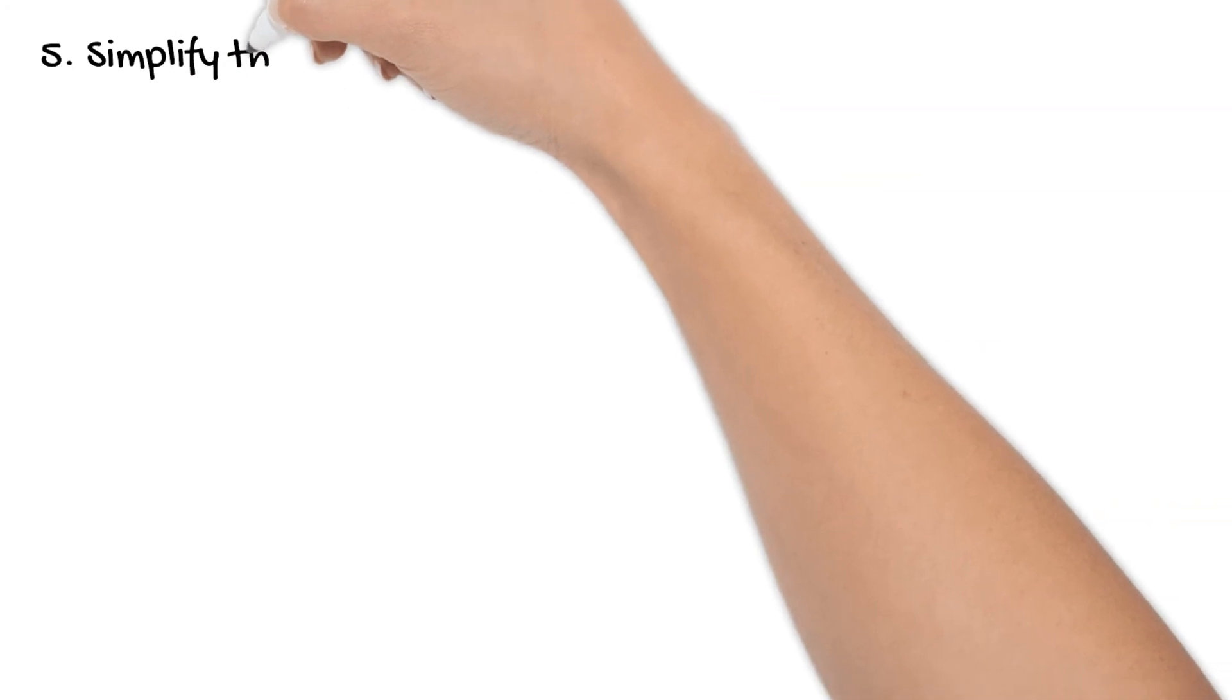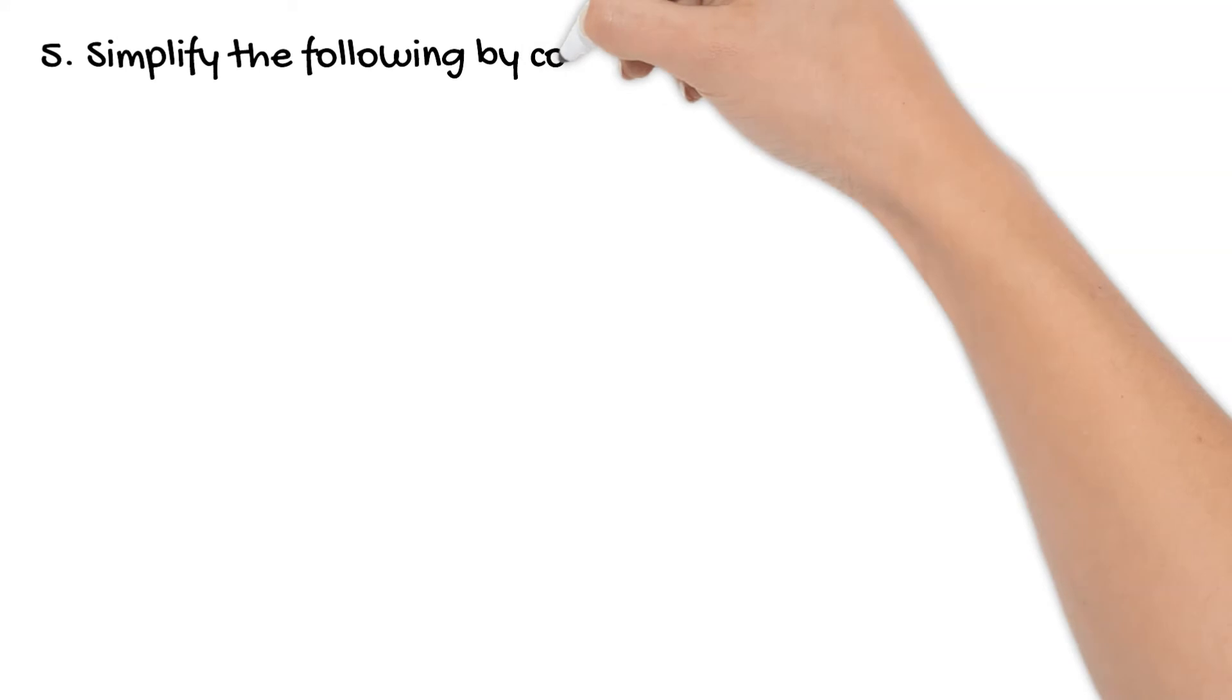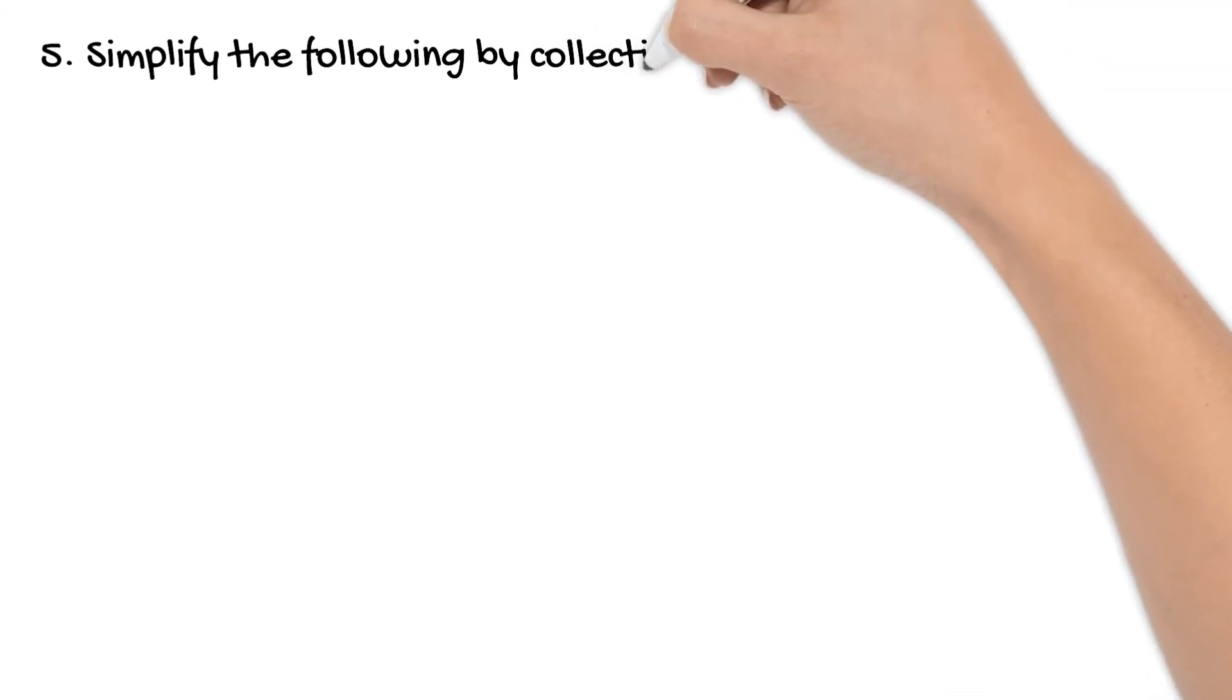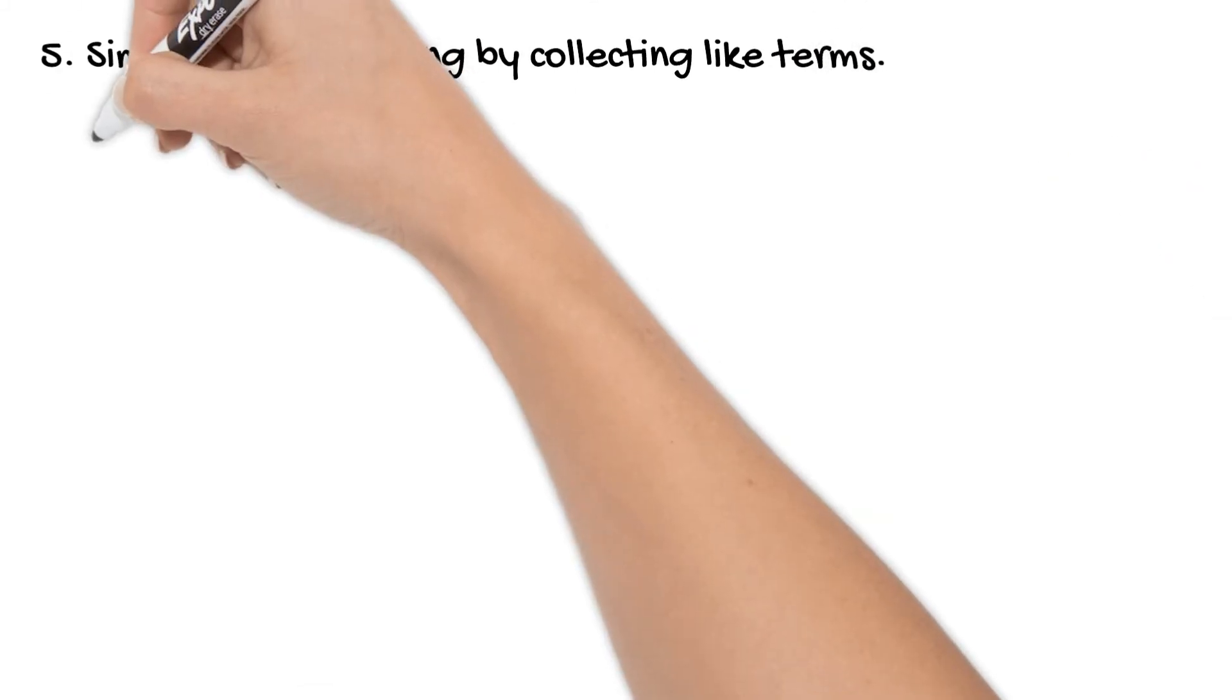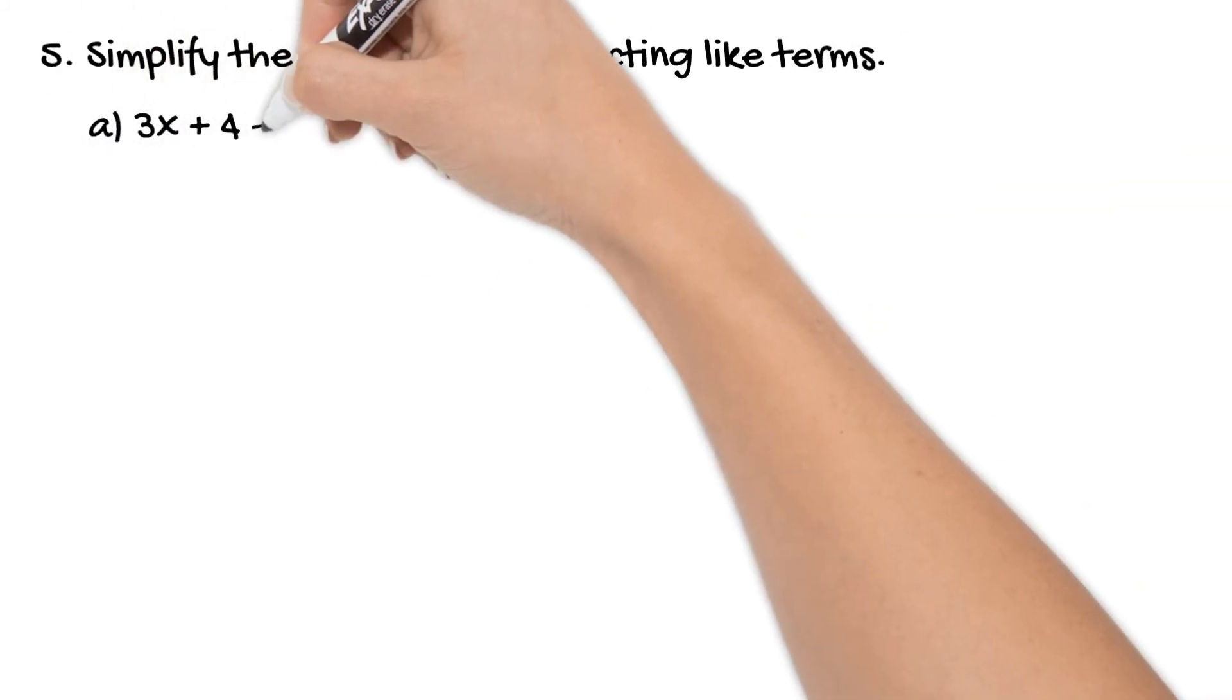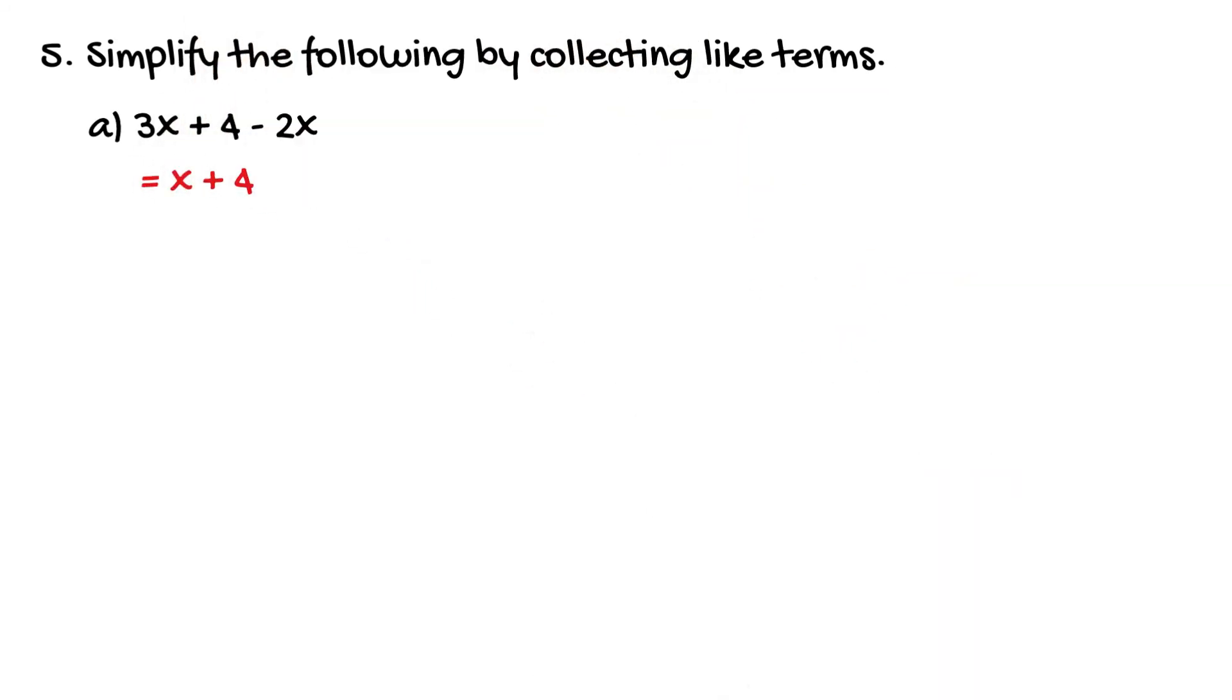So the last thing I want to focus on today is looking at like terms. Now as I mentioned at the beginning of the video like terms contain exactly the same pronumerals and when we're adding and subtracting algebraic expressions we can only add and subtract like terms. So if we have an expression 3x plus 4 minus 2x we can't do anything with that 4 because it's not like the x's. It has no x. So the 4 is going to stay as is. So we're simply just going to work with the x's. So we've got 3x take away 2x which is of course x and so our final simplified expression is x plus 4. It gets no simpler than that.